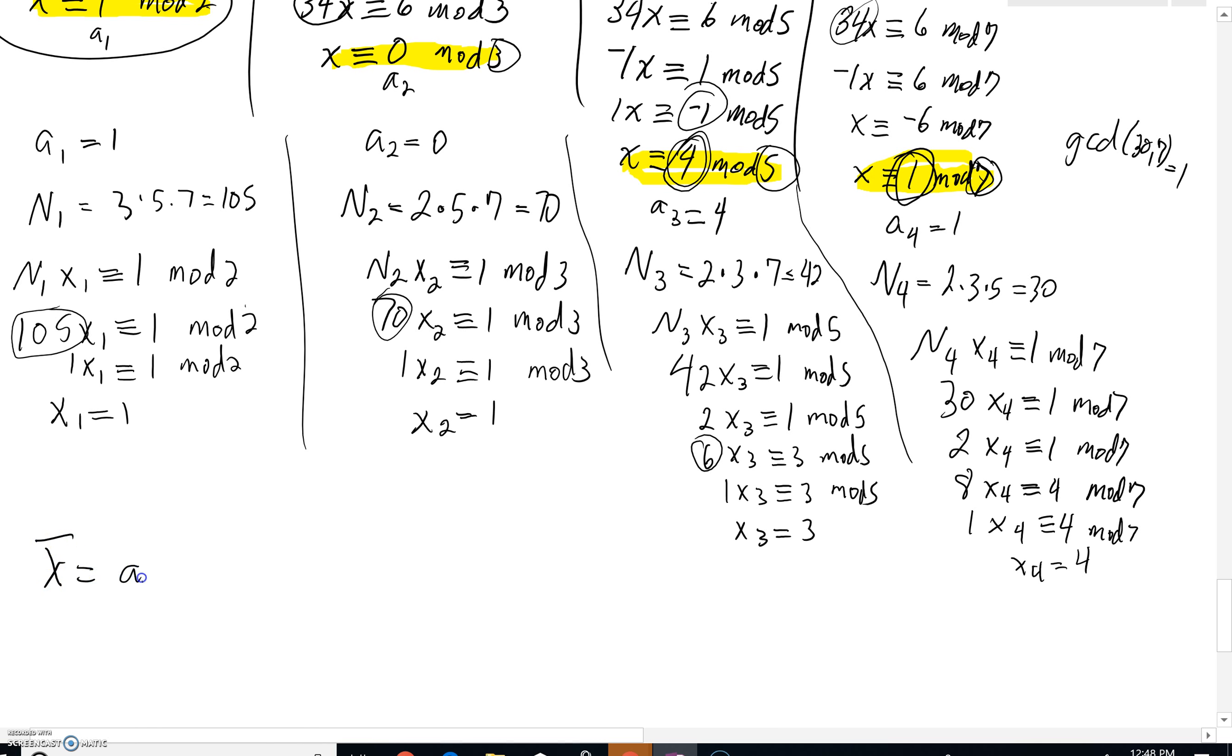x̄ is going to be a1 times N1 times x1 plus a2 times N2 times x2 plus a sub 3 times n sub 3 times x sub 3. Finally, we've got our a sub 4 times n sub 4 times x sub 4. We've got our a sub 1, n sub 1, and x sub 1 right here. That's 1 times 105 times a 1.